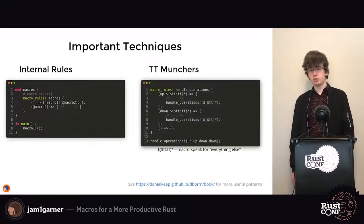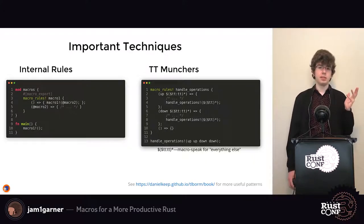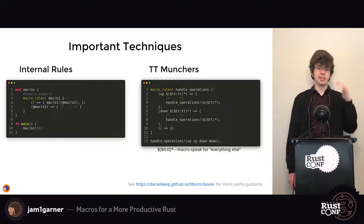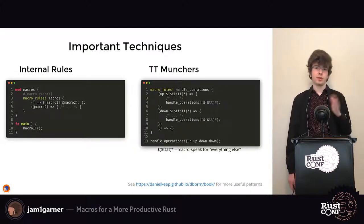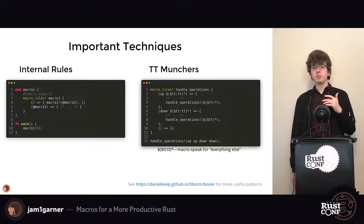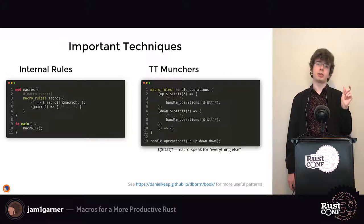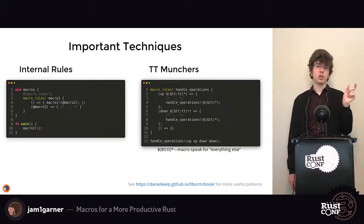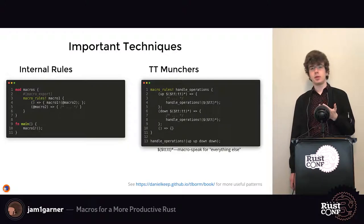Another important technique is called a tt muncher. TT stands for token tree — everything in Rust is split into tokens in a tree format, where things inside brackets are children of the bracket tokens. If you match against repeated token trees you match against everything passed into the macro. If you match against something and then the rest of the token trees, you can handle one token at a time, passing the rest back into the macro.